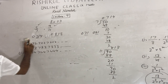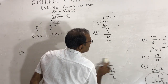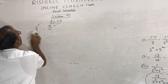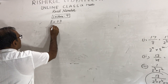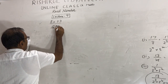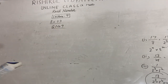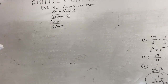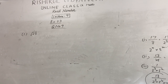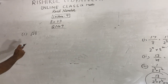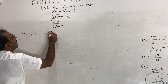Question number 9: classify the following numbers as rational or irrational. First: √23 — because you cannot take the exact square root of 23 (it is not a perfect square), it is an irrational number.